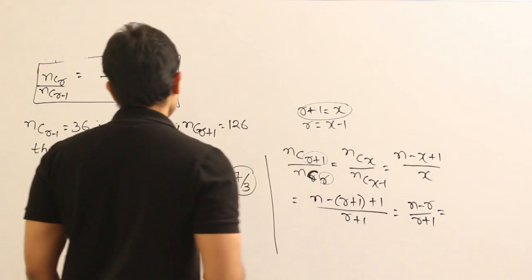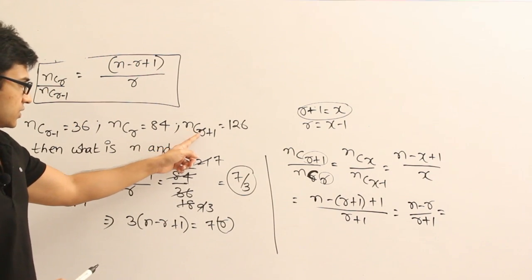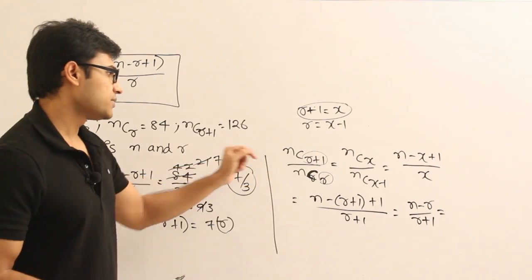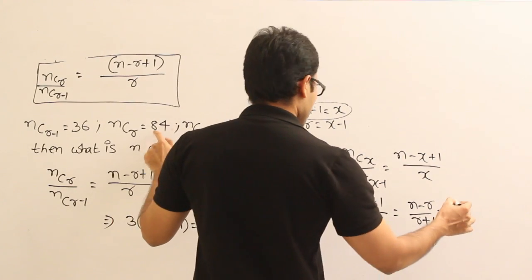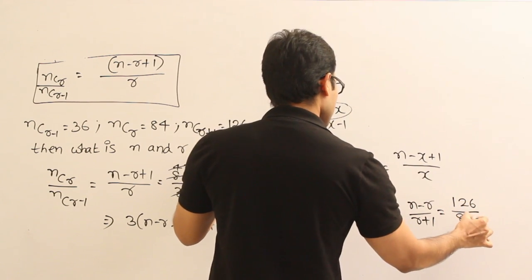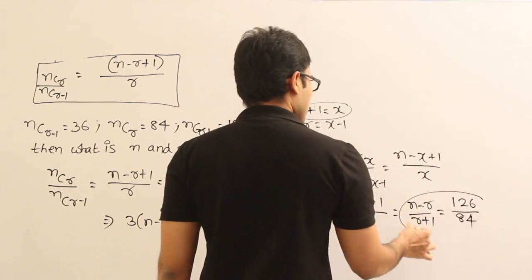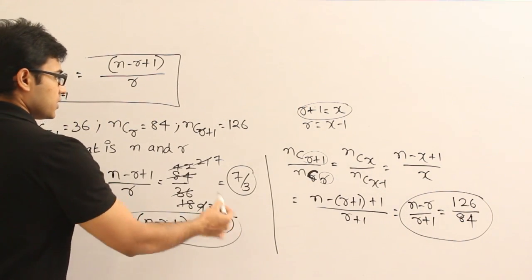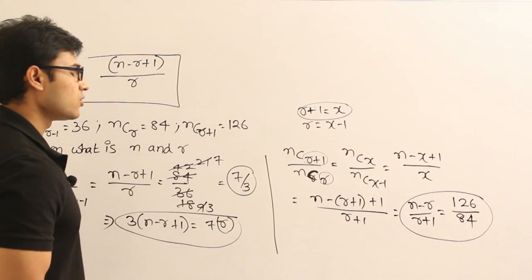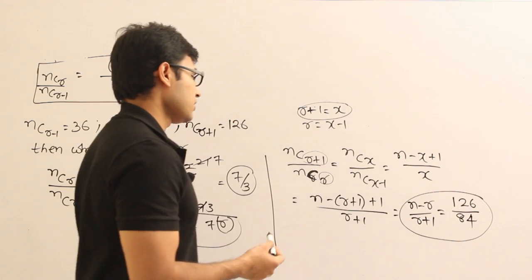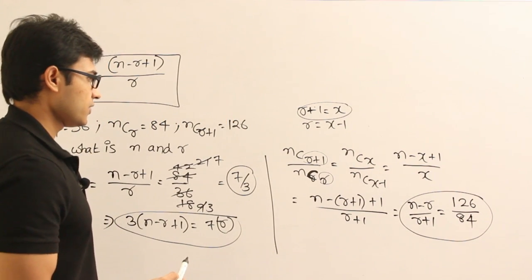So what do we get here? We already know that nC_(r+1) divided by nCr equal to 126 divided by 84. So now you can cross multiply this and you will get one equation. So already we got one equation here, and if you cross multiply that, you get one more equation, and using these two equations you can directly solve the two values of n and r.